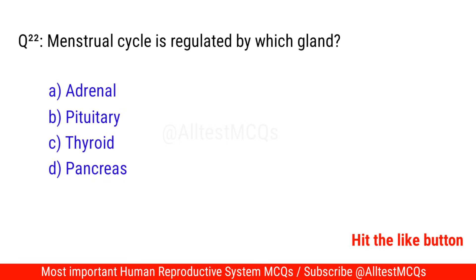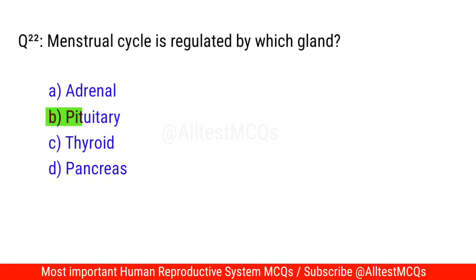Question No. 22: The menstrual cycle is regulated by which gland? The correct option is B. Pituitary.